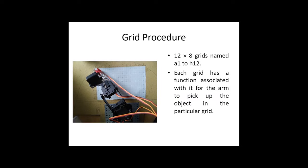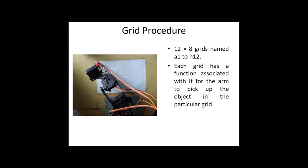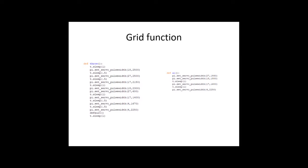In order for the robotic arm to accurately pinpoint the location of the objects, we divided the workspace into a grid of 12 by 8 and assigned a function for each grid space. When an object is detected within a grid, the robotic arm is automatically called towards that grid to pick up the object. These grids are activated by grid functions with the name of the grid, namely A1 to H12. Two functions are defined: one is throw to throw the object into the bin, and A1, which is the name of the A1 grid.